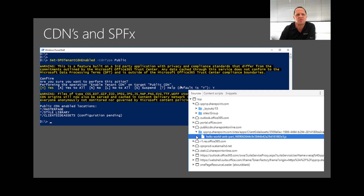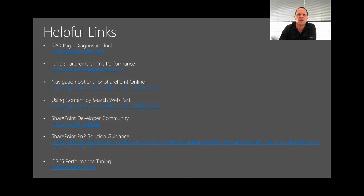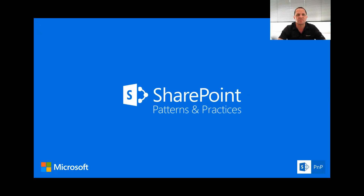When you use the SharePoint Framework with CDNs enabled, by default we put the client-side assets library or folder into the CDN, and the JavaScript files you upload will automatically go there for you. To close out, we'll cover the CDN command set in coming videos — I'll take you through how to actually configure them. As always, we'll have helpful links at the end of all our sessions. Thank you very much for your time today.